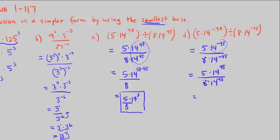We can combine these two by subtracting 95 minus 98. That's 5 over 8 times 14 to the negative 3. This negative 3 we can move into the denominator, so we multiply by 14 to the positive 3. So this is part D.